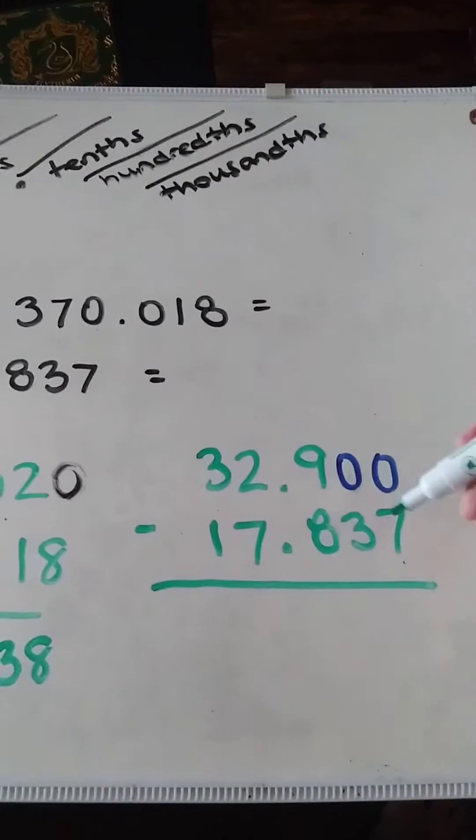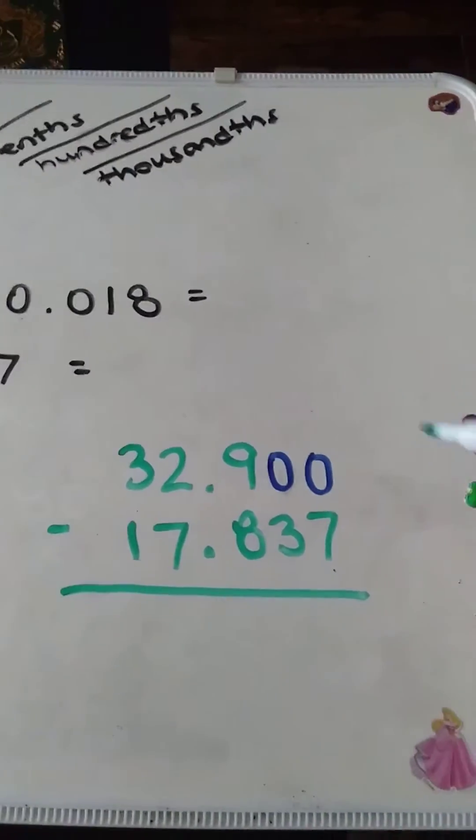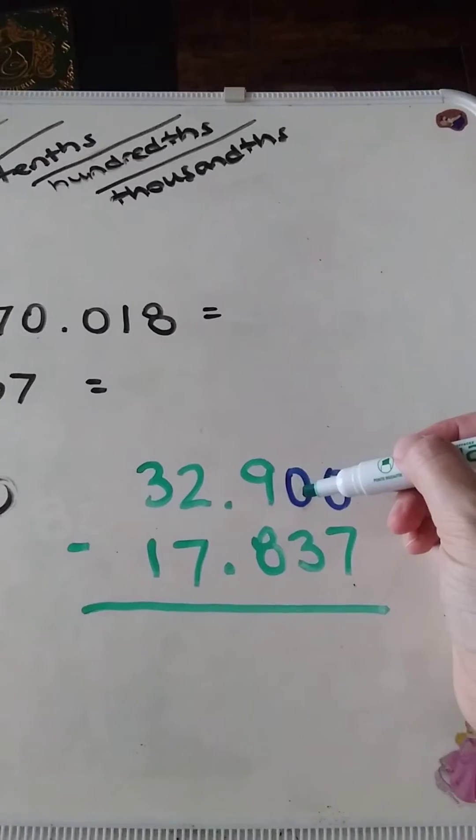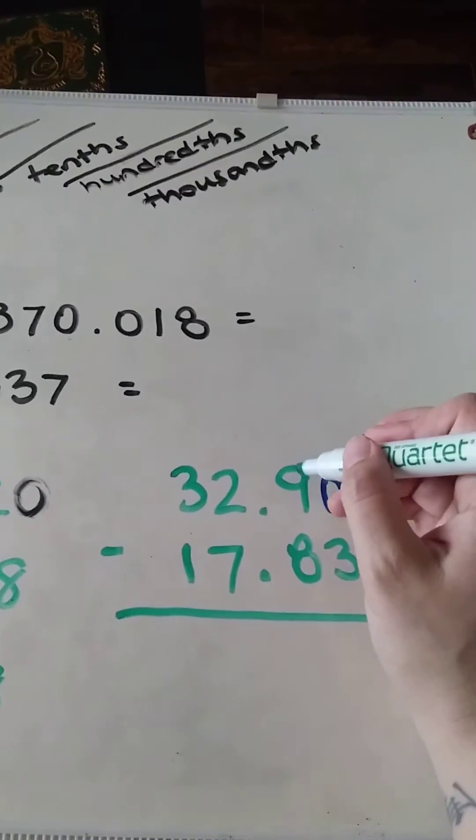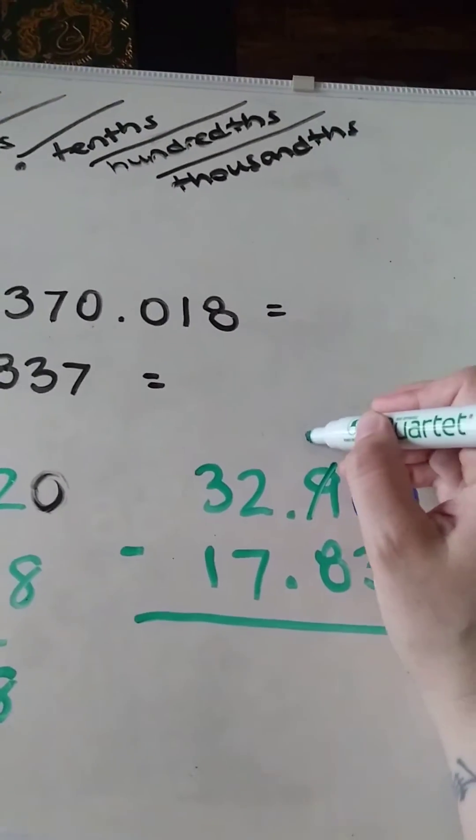So I'm going to do zero minus seven. Oh, I can't do that. I have to go and borrow. I don't have anything to borrow from there, so I'm going to borrow from the tenths place, just the same as regular subtraction.